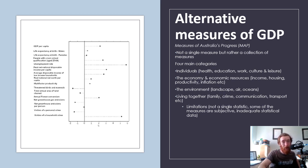One personal issue with MAP is that it's a lot to take into account. It's important because it captures many non-material aspects of life, but it doesn't give you a clear statistical figure of whether we're doing better or not overall.